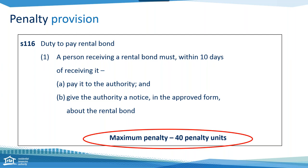For a corporation it's five times the individual amount under the Penalties and Sentences Act. So you would multiply $5,338 by five, meaning the maximum amount for a section 116 offence — failure to pay a rental bond — that could be issued by the court as a fine would be $26,690. And that's for just one non-lodgement or even a late lodgement of the bond.